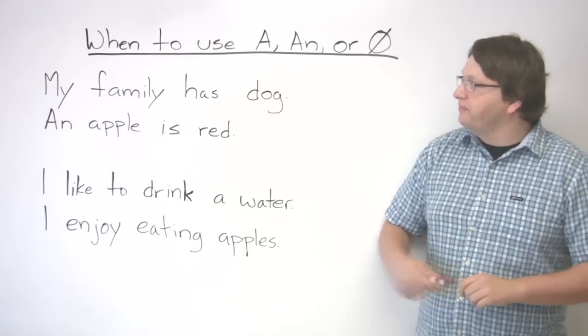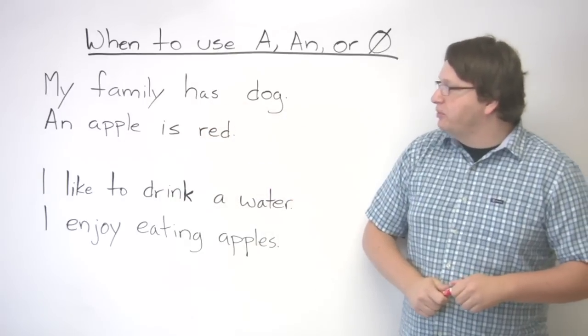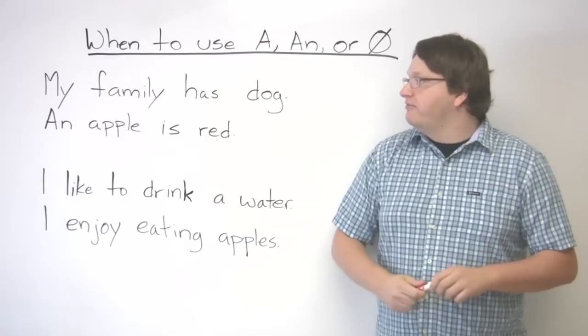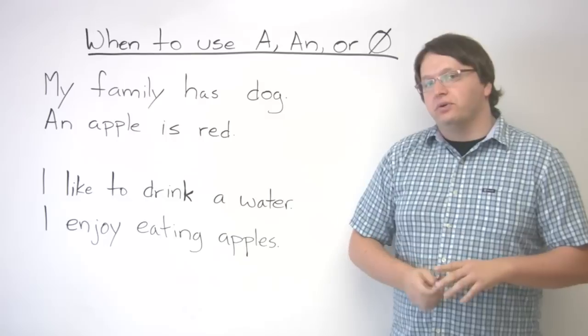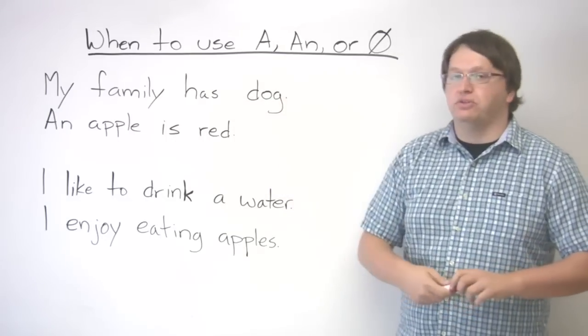Okay, so we have a sentence here. My family has dog, and an apple is red. First, let's look at the first sentence again. My family has dog. Okay, so the first thing we need to identify here is that dog, the noun dog.